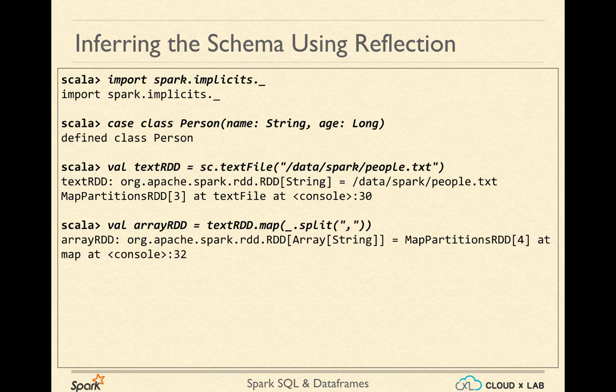Now, let's convert each line of the text into an array of strings by splitting on the basis of comma. This can be easily accomplished using the map transformation and the split function. The resulting RDD would have an array with two strings in each record.